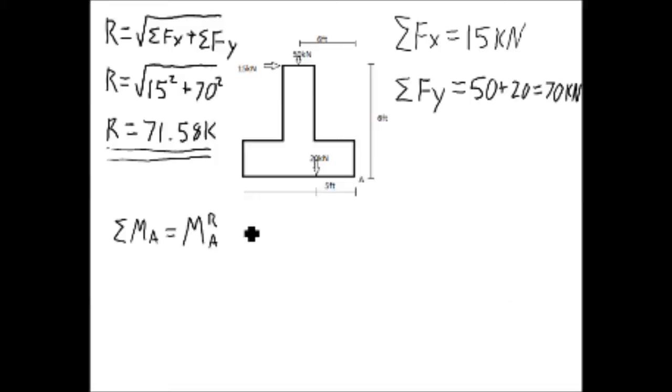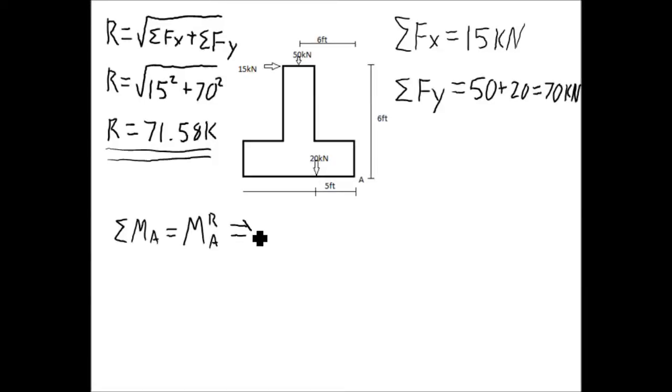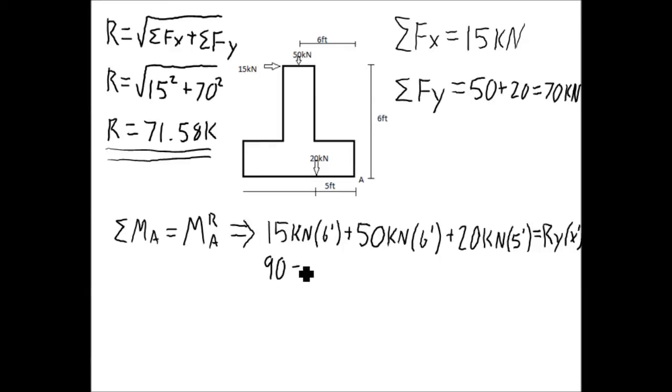For this problem, we can find the summation of moments about A, which is equal to the moment of the resultant of A. To find the summation of moments about A, we must take all forces and multiply them by their distance from A. In this problem, the summation of moments about A will be 15 kN times 6 feet plus 50 kN times 6 feet plus 20 kN times 5 feet.